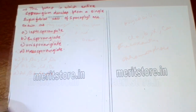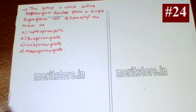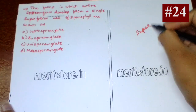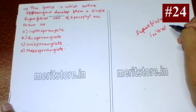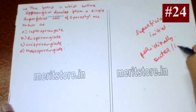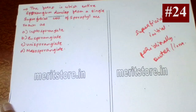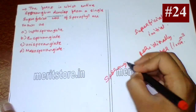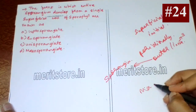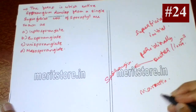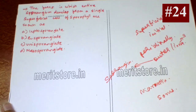Ferns in which the entire sporangium develops from a single superficial cell are known as leptosporangiate. Such a sporangium arises from a single superficial initial, which divides periclinally into outer and inner compartments — the inner forms the stalk and the outer gives rise to the sporangium proper. In Marattia, the sporangia in sori may fuse to form synangia. So option A is the correct answer.